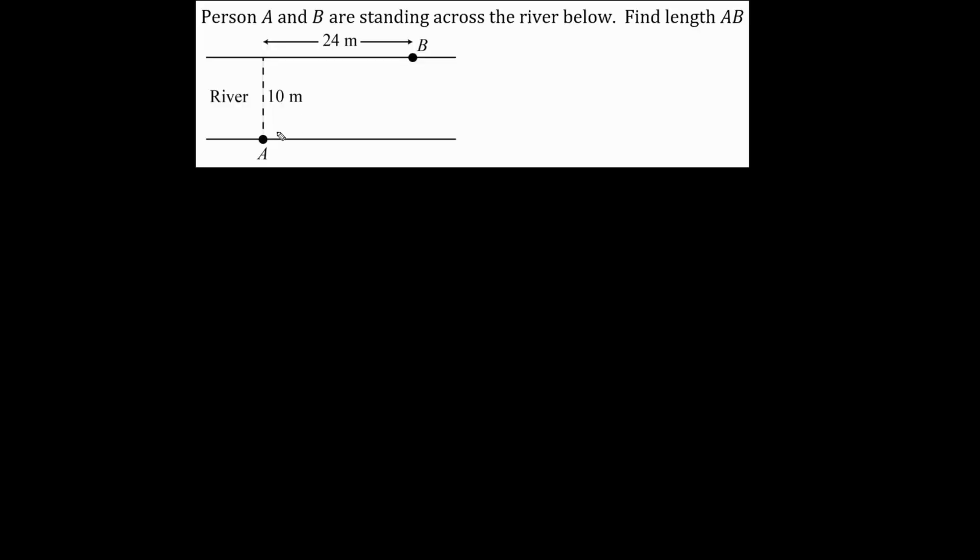Let's find length AB. We have 10, 24, and 26. This here is the Pythagorean triple. Recall 5, 12, 13, and we double each side. So length AB is 26 meters.